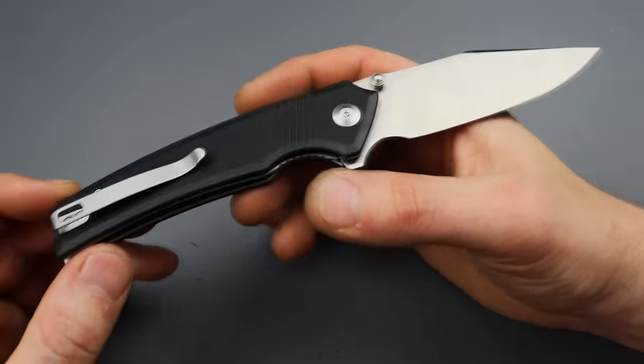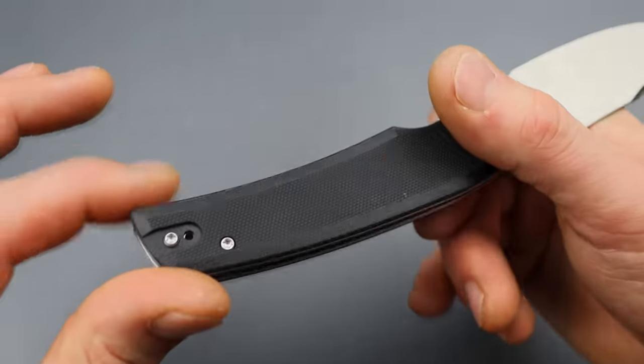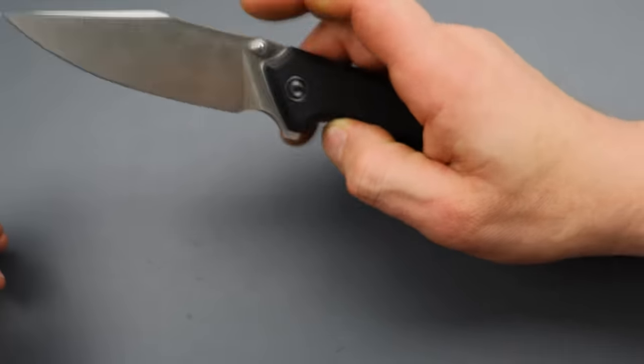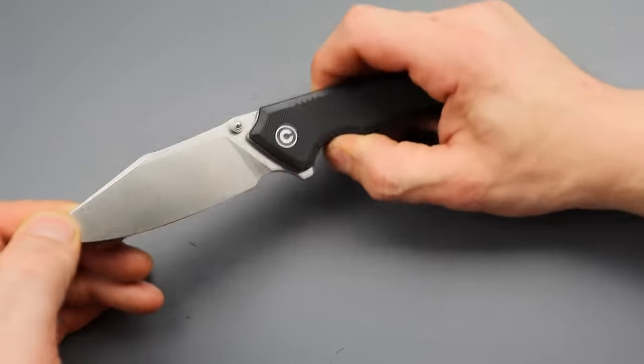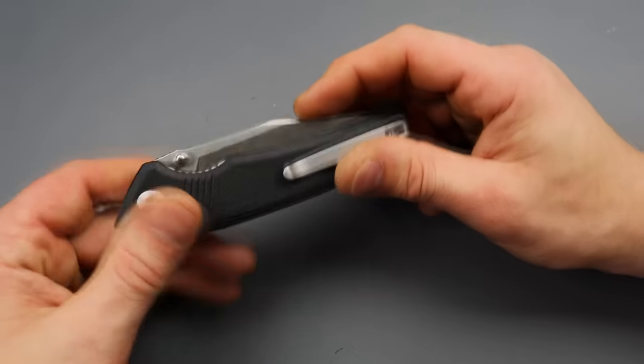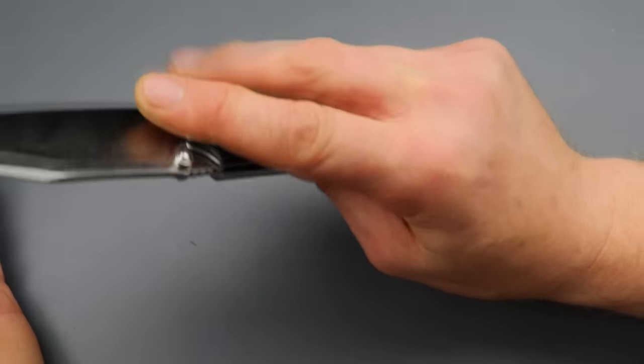Deep carry clip that's in set with flat screws and reversible, as most Civivis are. Not all, though. Not all. Some of them don't have reversible clips. But TA hardware all the way around, this is just an absolute banger.